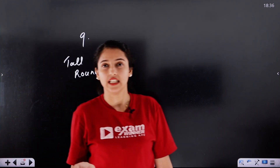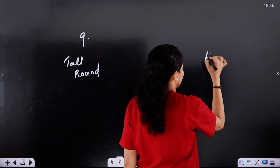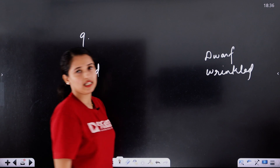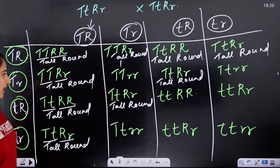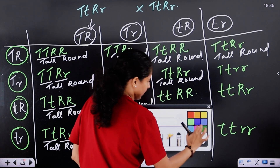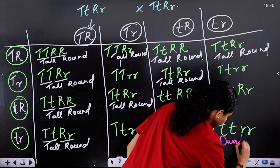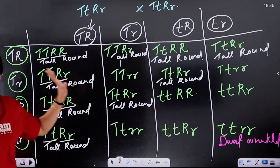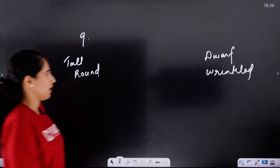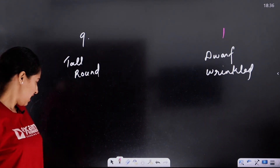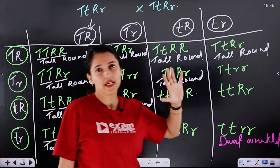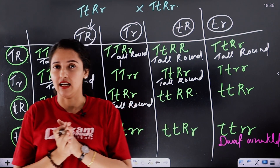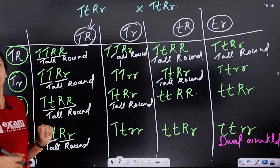Now let's look at how many dwarf wrinkled we have. Dwarf wrinkled is another phenotypic class. This is a parental character as well. We expect to see the parents' characters because there is no way of changing — this follows the law of segregation. This is what we have discovered in our dihybrid cross.